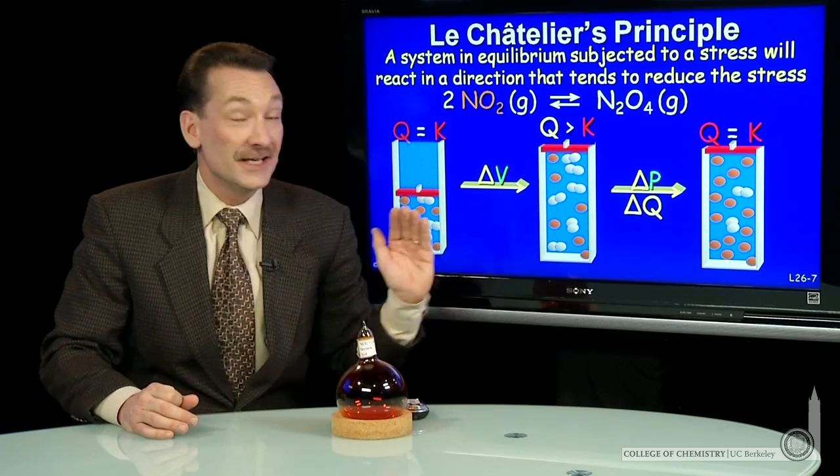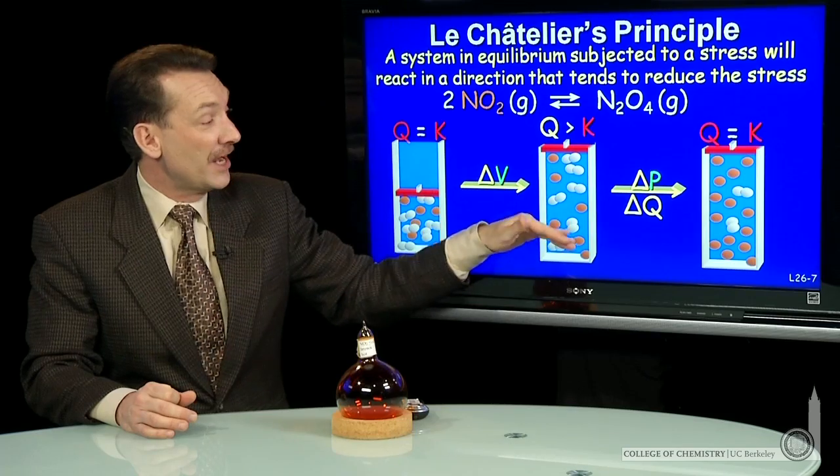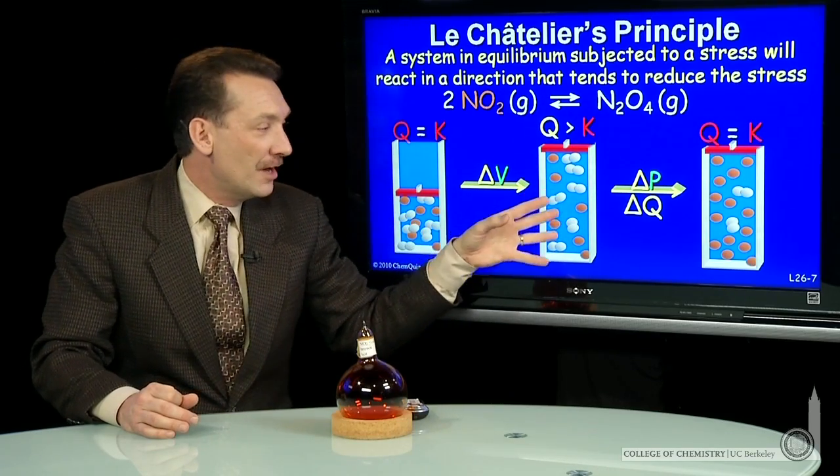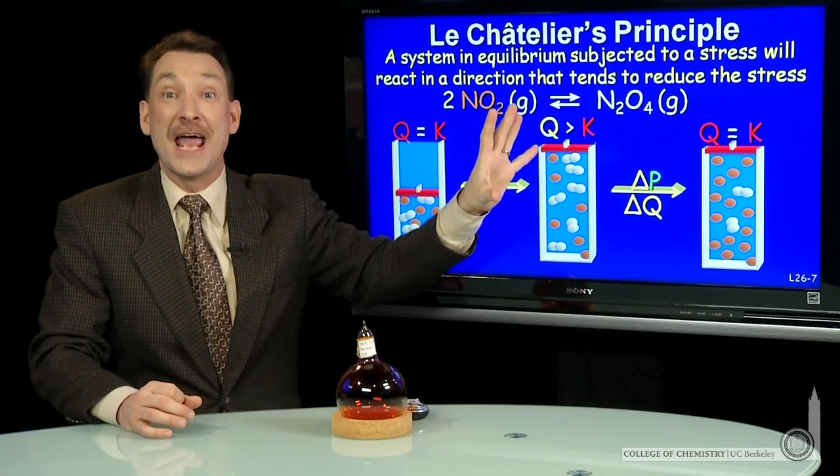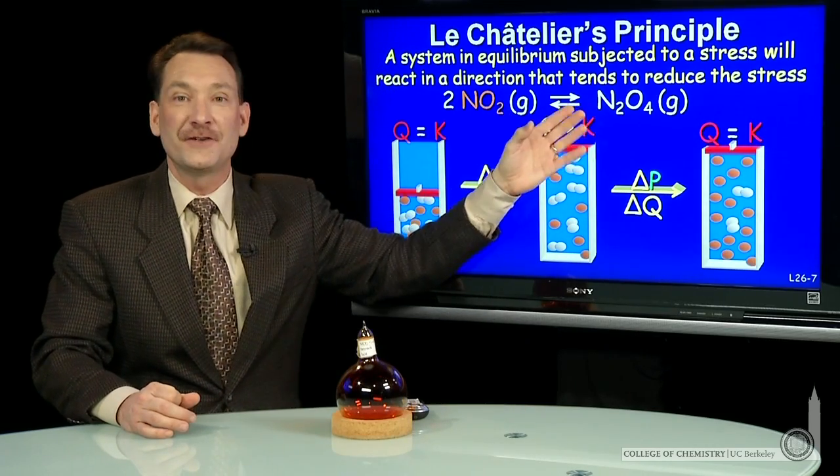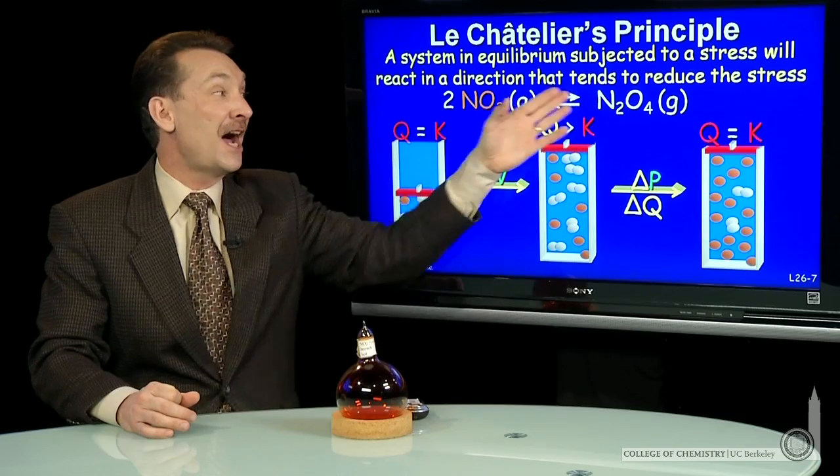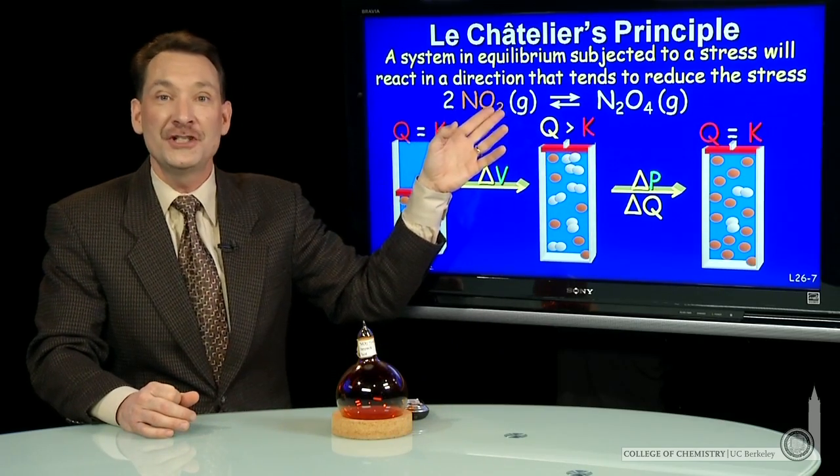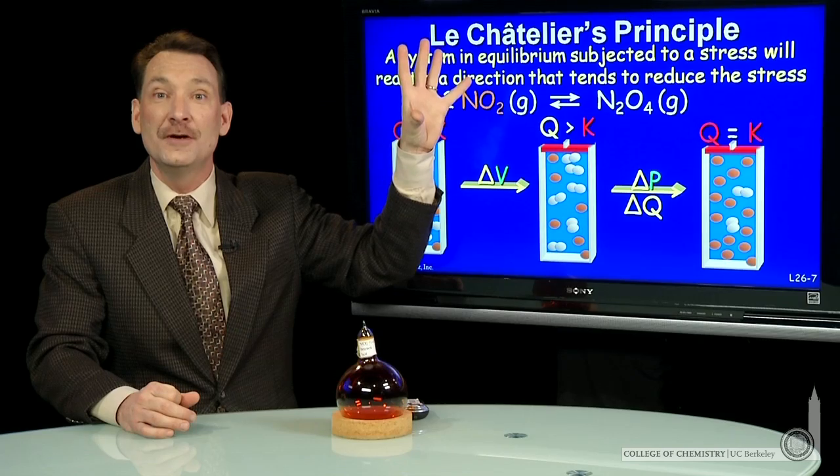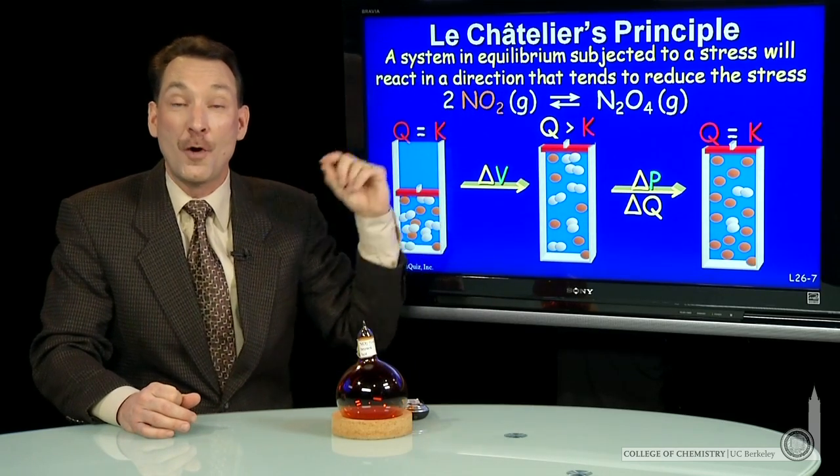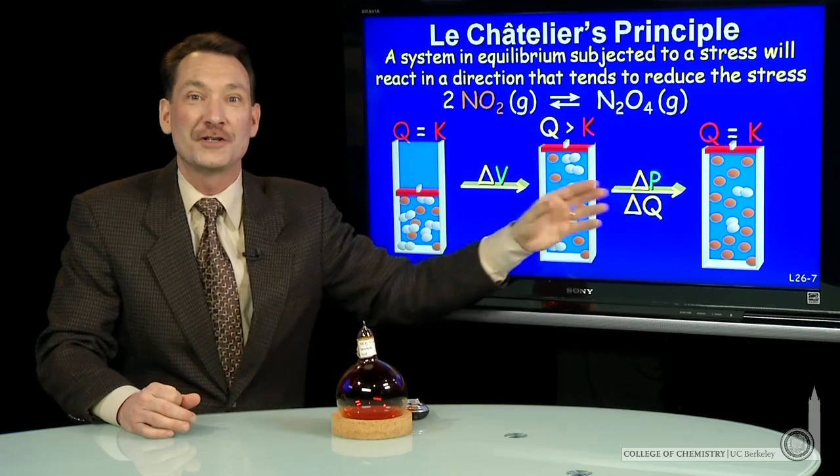What you'll notice here is you could have thought of this another way. The system expanded and went to a larger volume, so the system wants to expand to fill that volume. How does the system expand to fill that volume? It goes to the side where there are more particles. If some of these particles dissociate, it can fill the volume more effectively. So I shift towards the side with more particles when I go to larger volume.